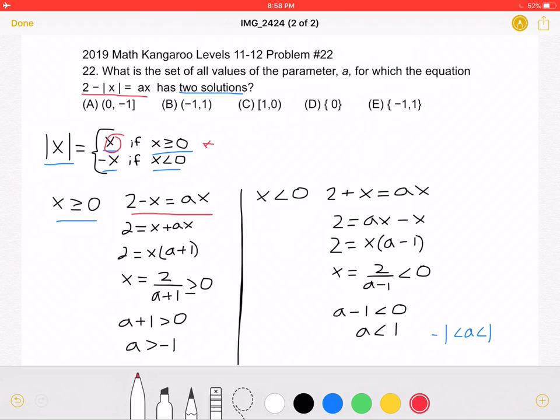Adding x to both sides, we would get that 2 is equal to x plus Ax, and we can factor out an x and divide by A plus 1 in order to isolate x. This must be greater than or equal to 0.